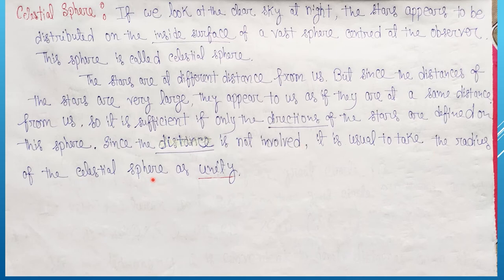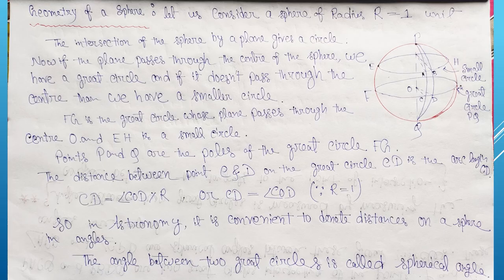Since the distance is not involved, it is usual to take the radius of the celestial sphere as unity. Now we will discuss the geometry of a celestial sphere. Here you can see any plane passing through the center of the sphere gives a great circle, and any plane passing through other points of the sphere gives a small circle.